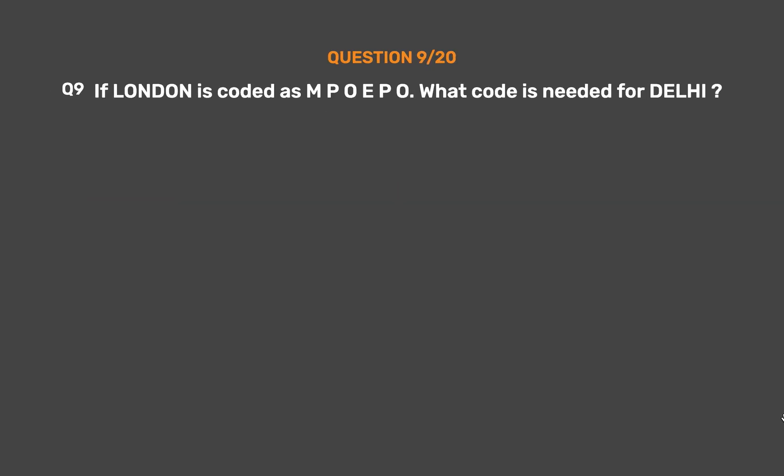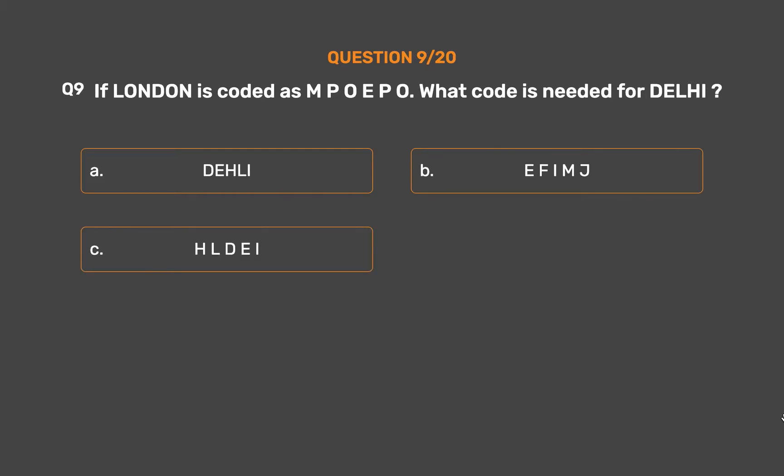Question number 9: If 'London' is coded as 'MPOEPО', what code is needed for 'Delhi'? Option A: DEHALI. Option B: EFIMJ. Option C: HLDEI. Option D: EFIMJ.